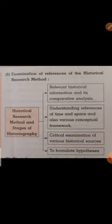Now, the historical research method and stages of historiography include relevant historical information and its comparative analysis. All related things are brought together, comparatively analyzed, and then studied, segregated, or clubbed further. Understanding references of time and space and various conceptual frameworks is also part of this — understanding at which place and at what time things would have happened and referring to related places and times.